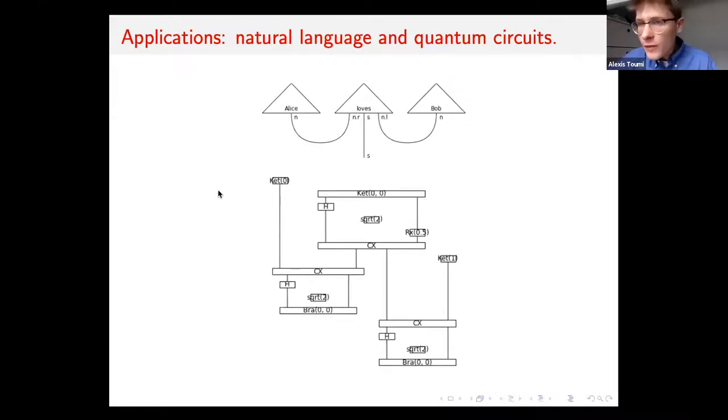The name DiscoPy comes from distributional compositional Python and it was meant as an implementation of the DiscoCat framework of Bob and Manoush and others. The idea is you can define diagrams for grammatical reduction, like Alice loves Bob, and you can define a monoidal category of matrices using NumPy. Now you can interpret this grammatical reduction as a linear map, computing the semantics for a grammatical sentence by applying a functor to it, replacing every noun by a vector, replacing a verb by a matrix.